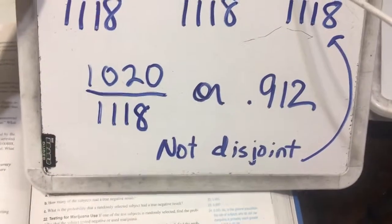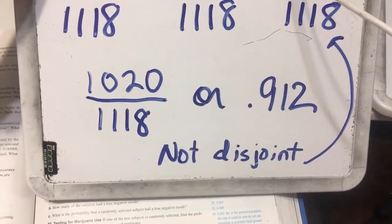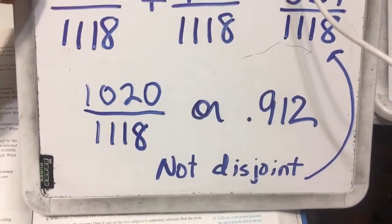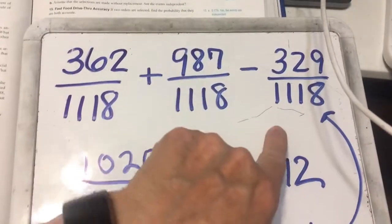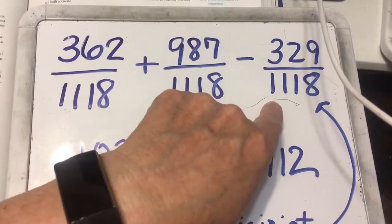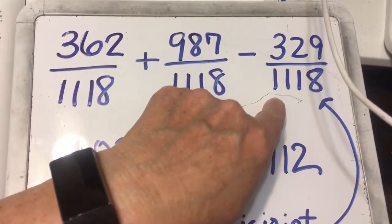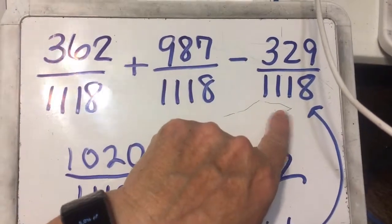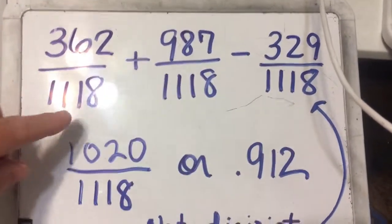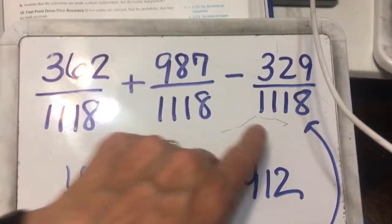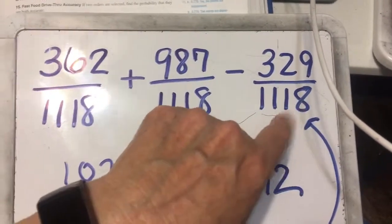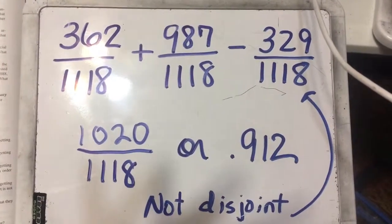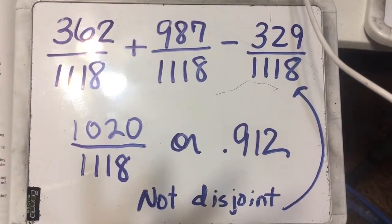When I divide that, it's 91% or 0.912. They are not disjoint because there is something in the overlap. Remember, a disjoint set means there cannot be anything in the intersection — no way to get both McDonald's and accurate. But this one is not disjoint. That is the end of problem number 11.